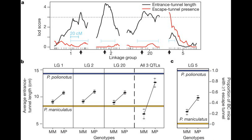Indeed, by genotyping the mice, the researchers found three genomic locations associated with entrance burrow length and one region associated with escape hatch construction. All four regions are unlinked and segregate on different chromosomes. This is one of the clearest examples of genetic loci contributing to behavior, making the burrows inarguable extensions of the phenotype.